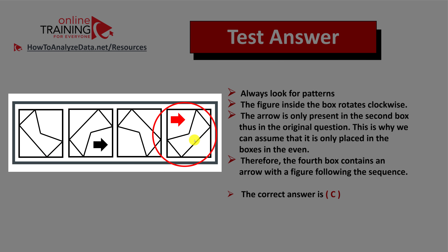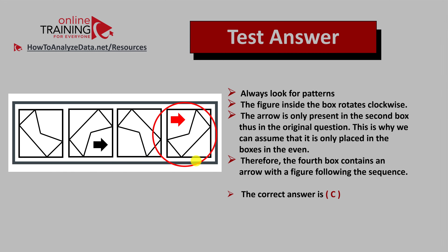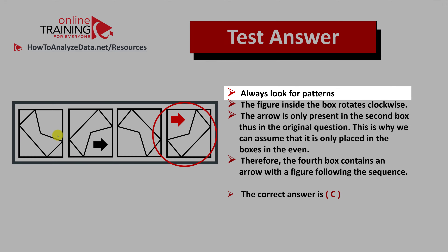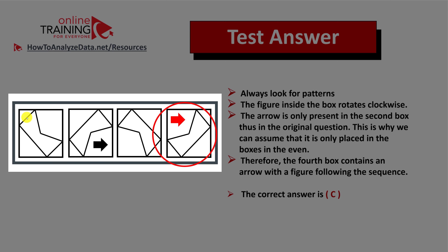Here's the answer — the fourth box in the sequence is now populated. Let's go through the logic so you know how to answer similar questions on the test. The tip is to always look for patterns. What you see is that the figure inside rotates clockwise. If you look at the corner of the shape, it was on the left side, then it touches the top line, and in the third box it touches the right line. So in the fourth box, it will be touching the bottom line.